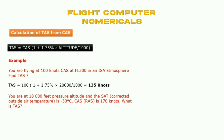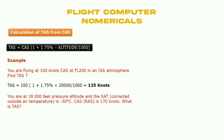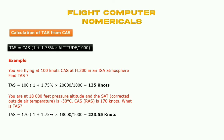Next question: you are at 18,000 feet pressure altitude and the static air temperature is minus 30 degrees Celsius, calibrated air speed is 170 knots — what is true air speed? Use the formula to solve this. If you put in the values, TAS will be 223 knots. Now we'll verify using the flight computer.